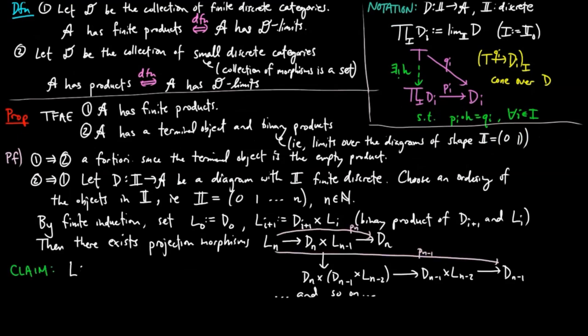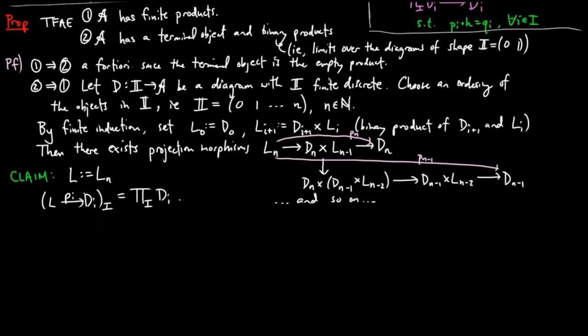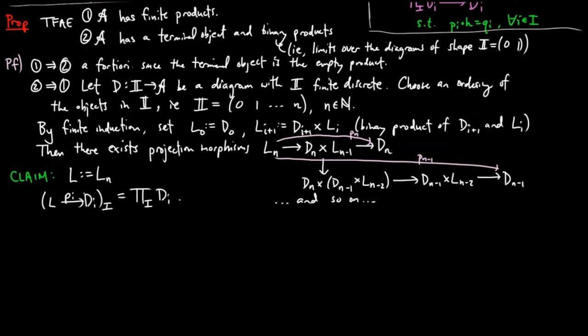We claim that by setting L to be L sub n along with the projections we have just described is the product in A over D. And we do this by verifying that it satisfies the universal mapping property of the product. So let Q sub i from T to D sub i be another cone over D.